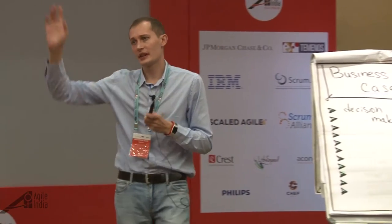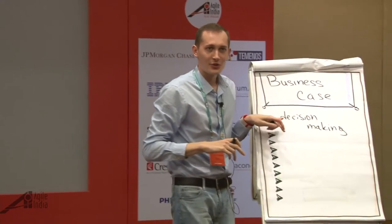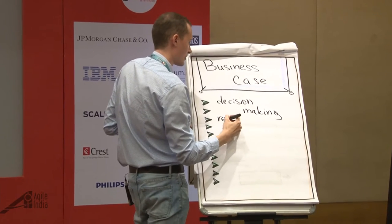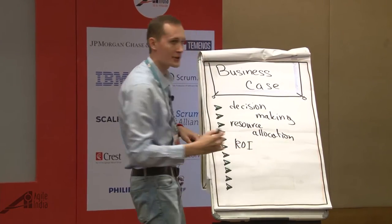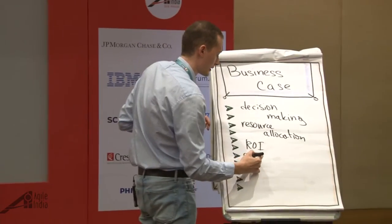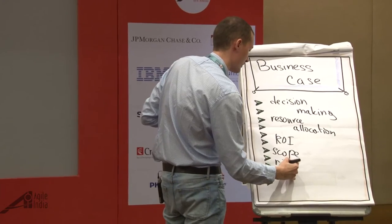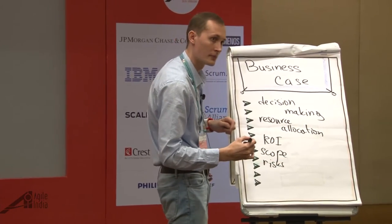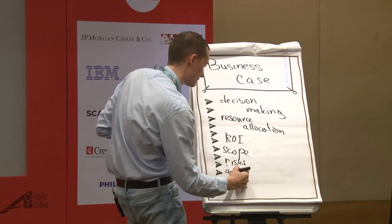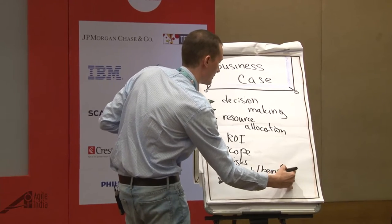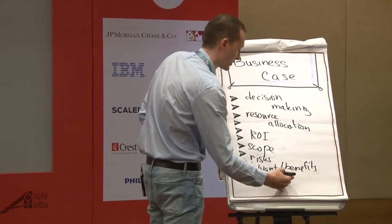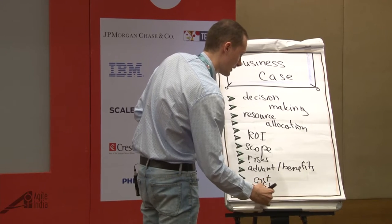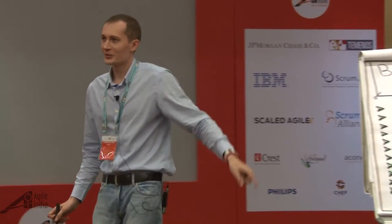A business case can contain things like resource allocation, return on investment or cost-benefit analysis, scope, risks, benefits, cost. And if we have scope and cost we can derive some sort of profitability and timeline. That's a lot of information to put together.